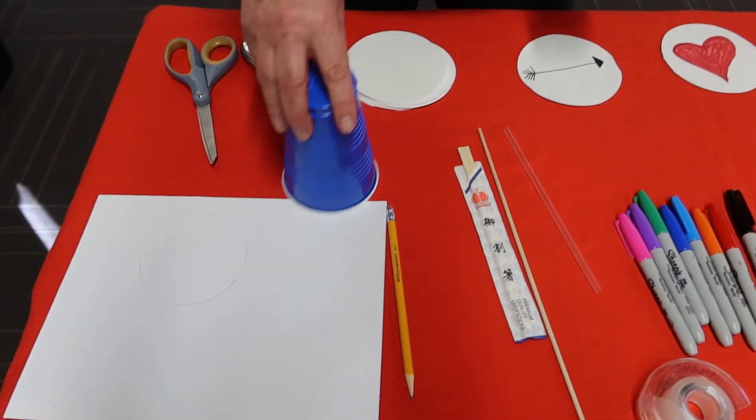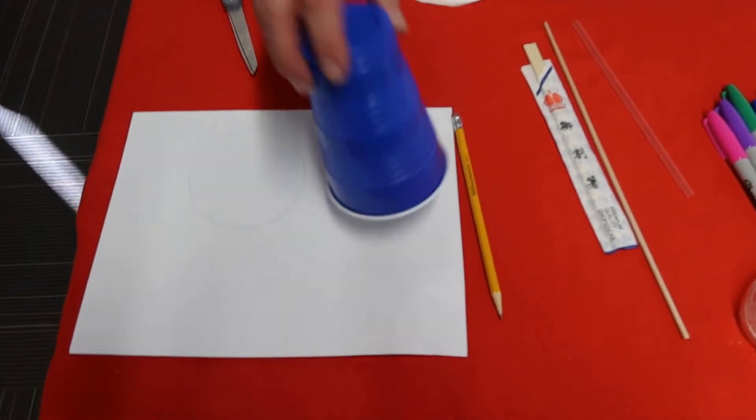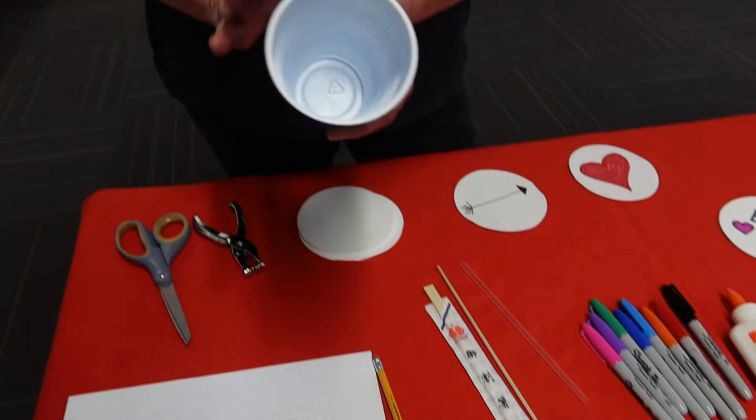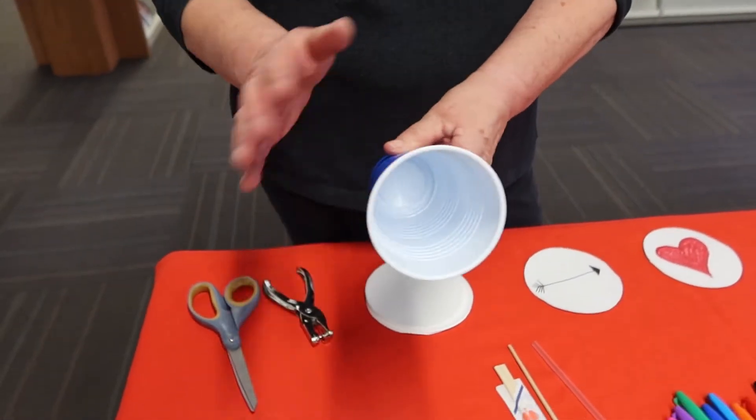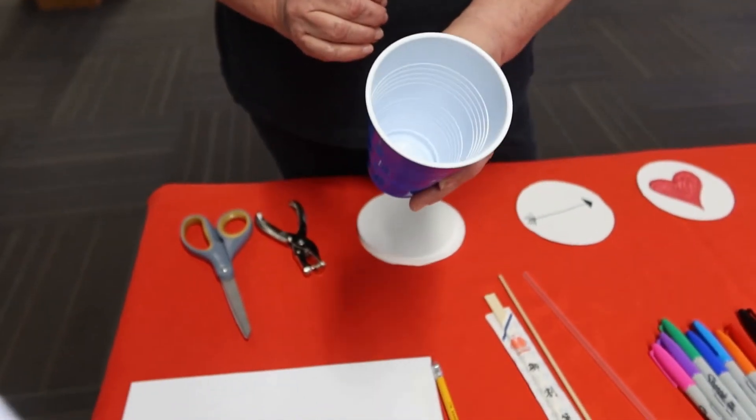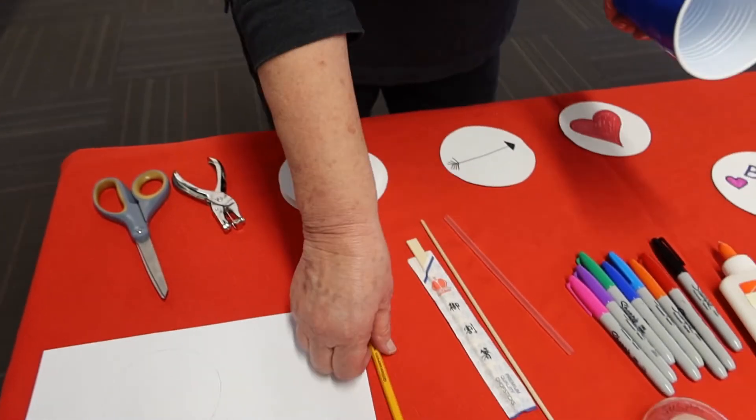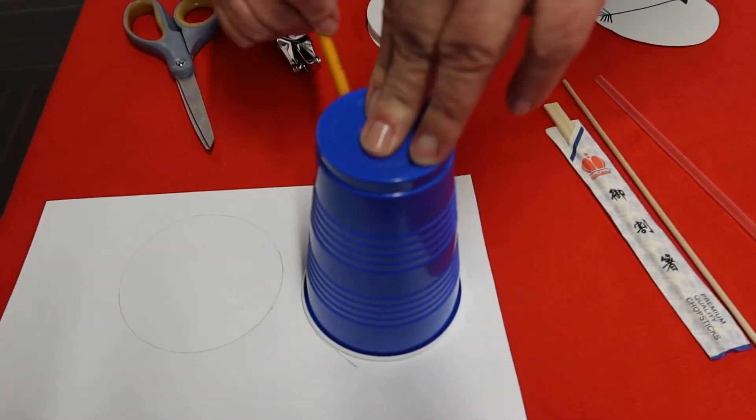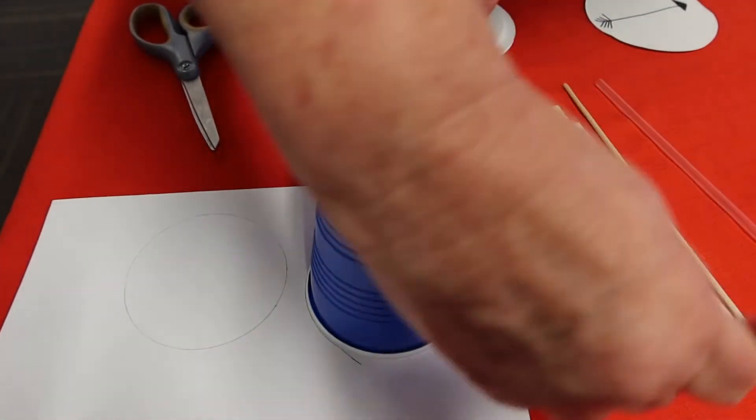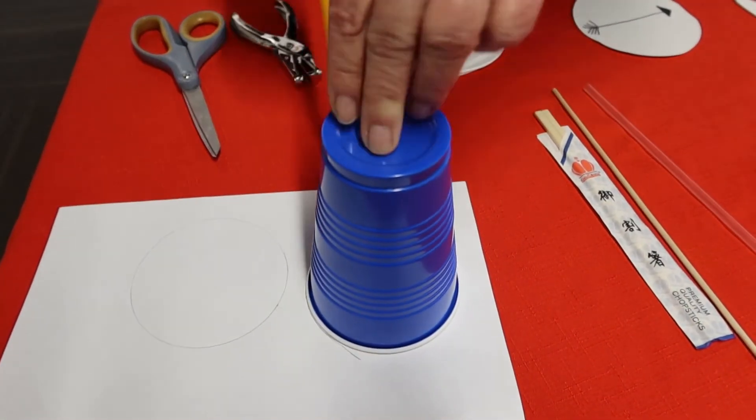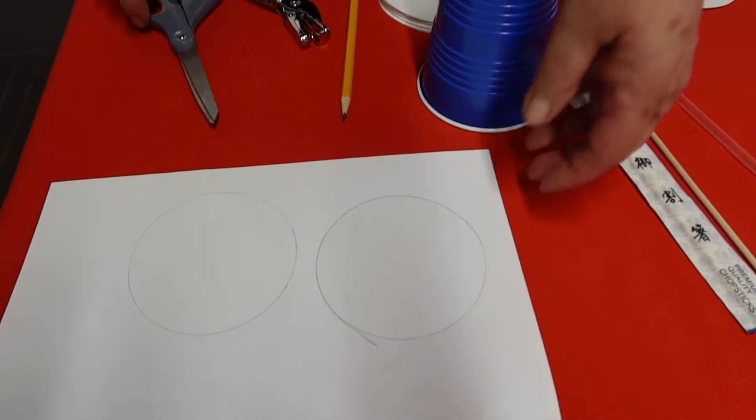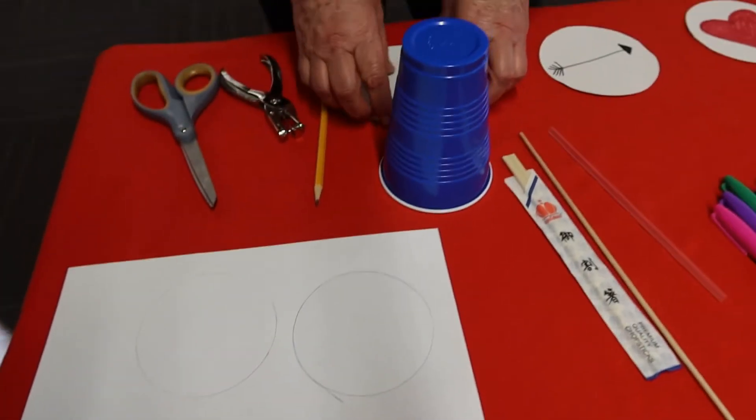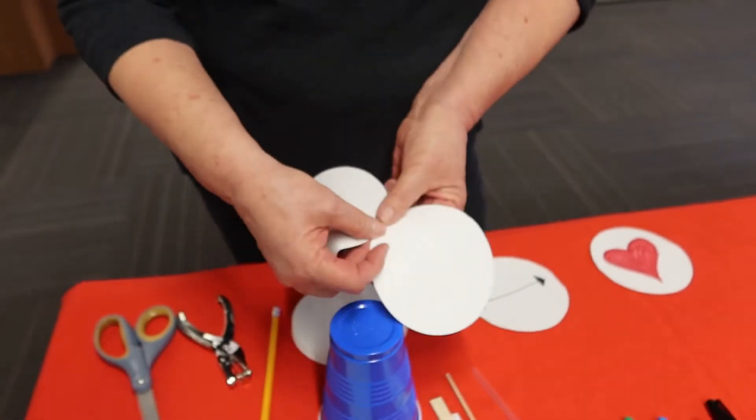First, to get started, you can use a large disposable cup to trace a circle around in order to make your circles for the thaumatrope. As you can see, then you'll just cut out two circles, like we have here.